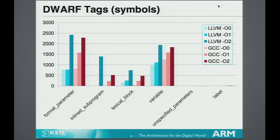If we just look at the symbols that were in the DWARF — I've removed all the ones that weren't interesting, leaving the ones that had any difference — as we can see, they're all related to inline functions: the parameters to inline functions, the inline function itself, lexical blocks in the inline functions, the variables in the inline functions. These are all things that increased in size as you optimized, showing that as you optimize, your debug info is going to grow just due to describing the inline functions.